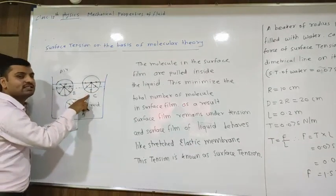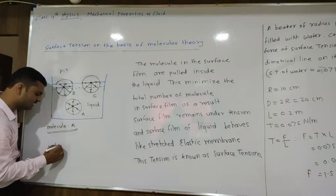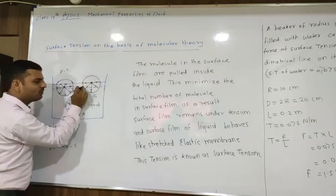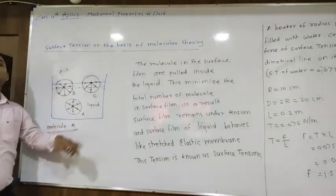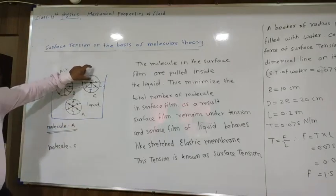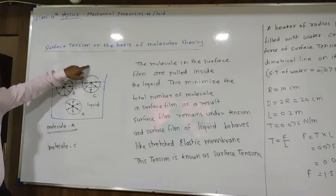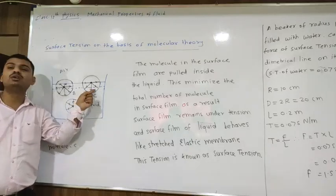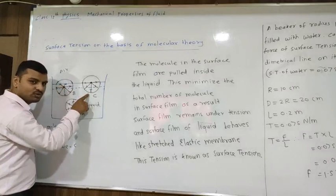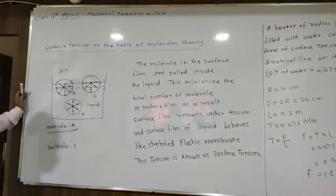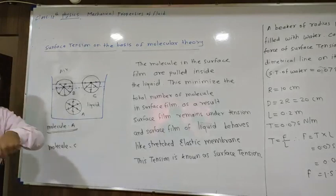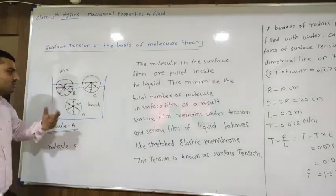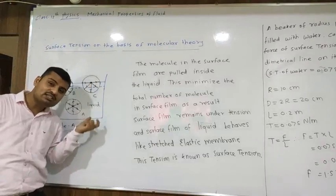For molecule C, half of its sphere of influence is in air and half is in liquid. The adhesive force between molecule C and air molecules is much weaker than the cohesive force between liquid molecules and molecule C. Since cohesive force is always greater than adhesive force, molecule C is also attracted inward toward the liquid.